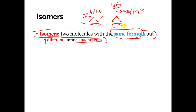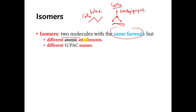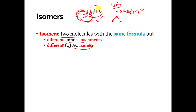There's another way to define isomers and it might be a little bit better. Isomers are molecules that have the same formula, but they have different IUPAC names. If I showed you two molecules and asked are they isomers or are they identical — if they're identical, they will have the same formula and the same IUPAC name. If they are isomers, they will have the same formula but different IUPAC names.